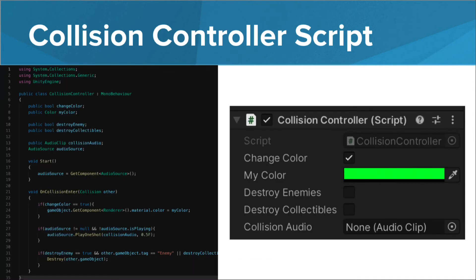In this lesson, you'll be using a collision controller C-sharp script that allows you to apply some collision actions to your game objects. If a game object collides with another, you can change the game object's color,